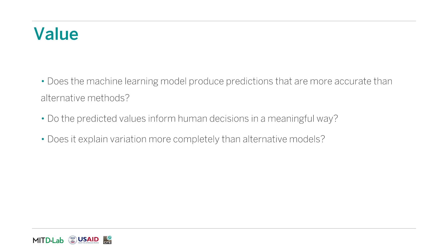The third criterion is value. Does the machine learning model produce predictions that are more accurate than alternative methods? Does it explain variation more completely than alternative models? Do the predicted values inform human decisions in a meaningful way? For example, are they actionable? Telling farmers that they could improve their yields by moving to a different elevation is not useful to them. Are they timely? Having information but not enough time to act on it provides little to no value. Are they delivered to the right people? You shouldn't build a system that provides information to frontline workers when decisions are made by their supervisors. While machine learning is a powerful tool, it is not always the best approach to all problems. Organizations should have sufficient reason to think that machine learning would add value and make sure that they evaluate that assumption before scaling solutions.